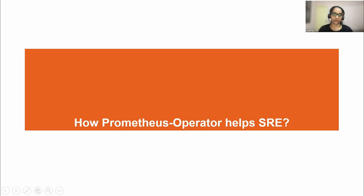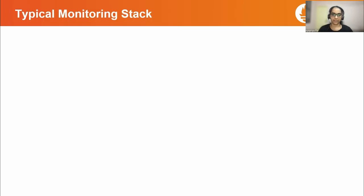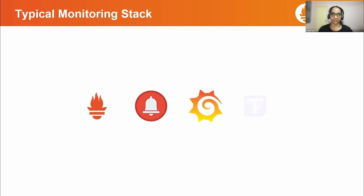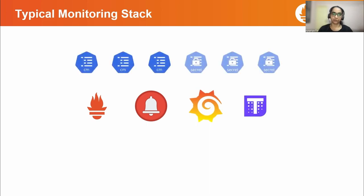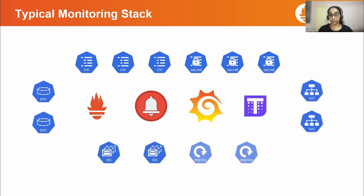A typical monitoring stack consists of Prometheus, Alert Manager, Thanos, and Grafana. Along with that, you also need to configure multiple config maps, secrets, persistent volumes, and services for interconnection. You can set up Prometheus-based monitoring manually onto a Kubernetes cluster by writing your own Kubernetes manifest files and deploying them in the right order due to dependencies. But creating and maintaining a production-grade setup can get complicated and error-prone, because you need to write correct Kubernetes deployment configuration along with the Prometheus configuration file to discover the right targets, configure persistent volumes, plan rollout updates, and so on. This can be very overwhelming and time-consuming.